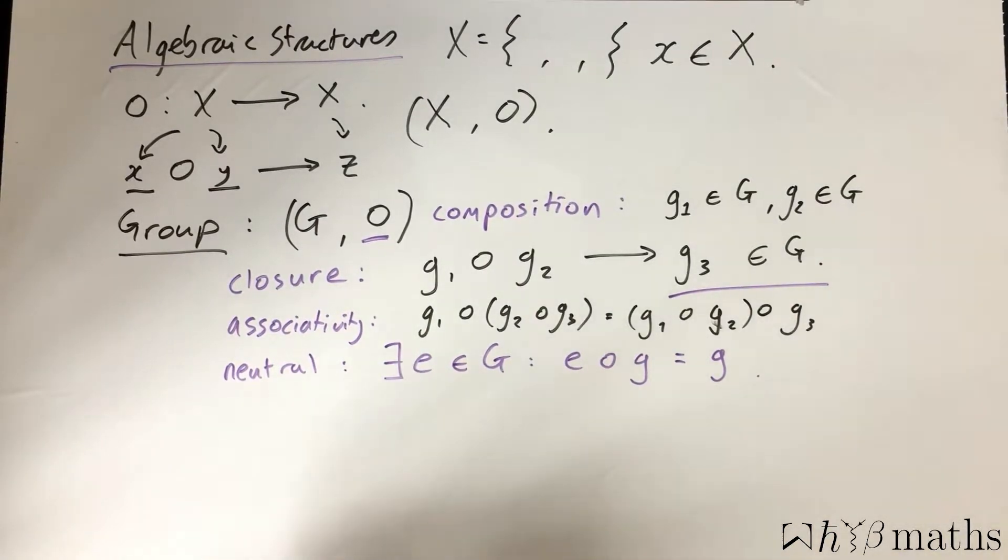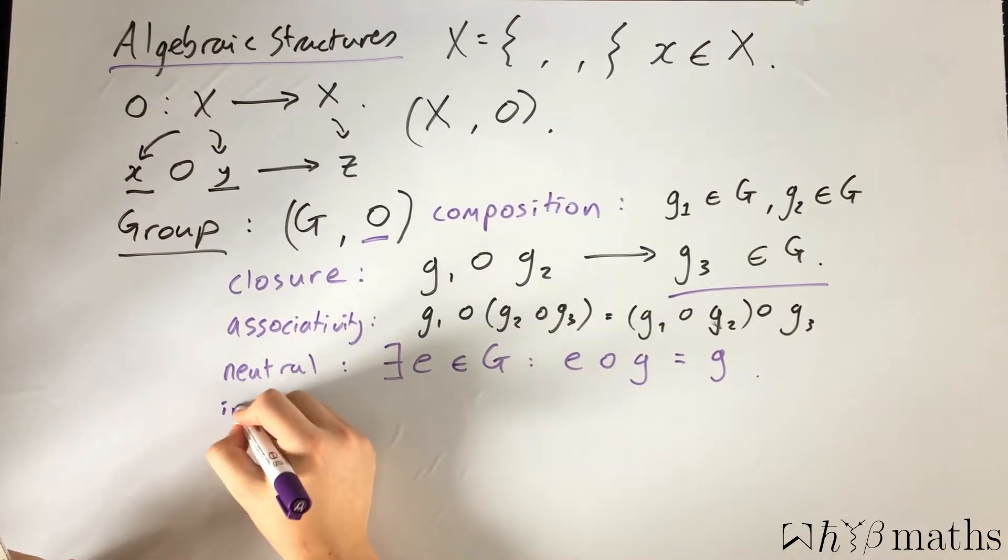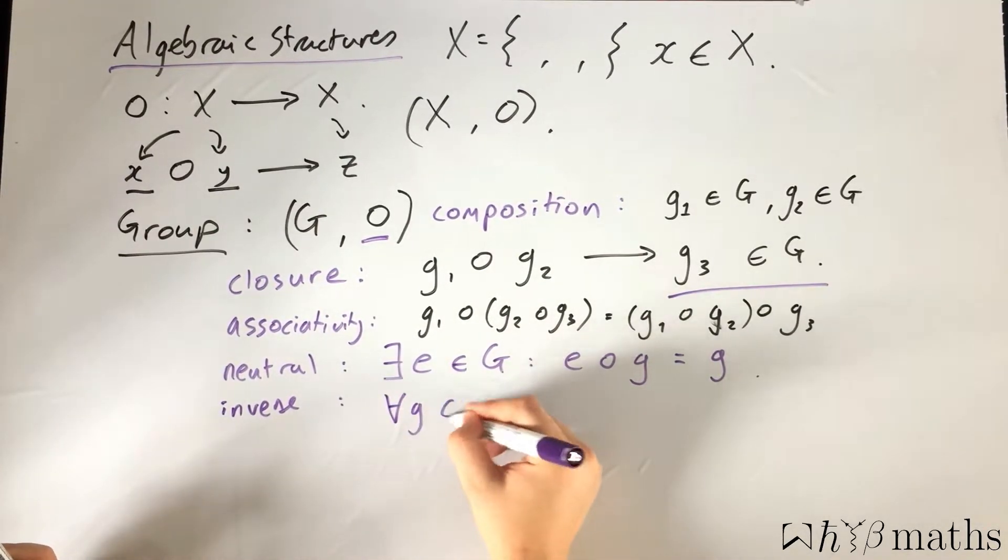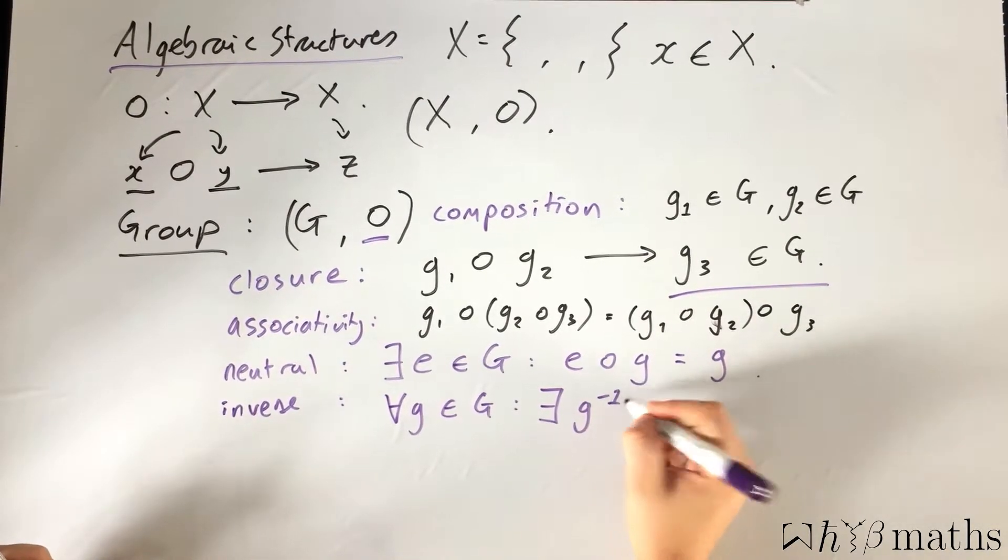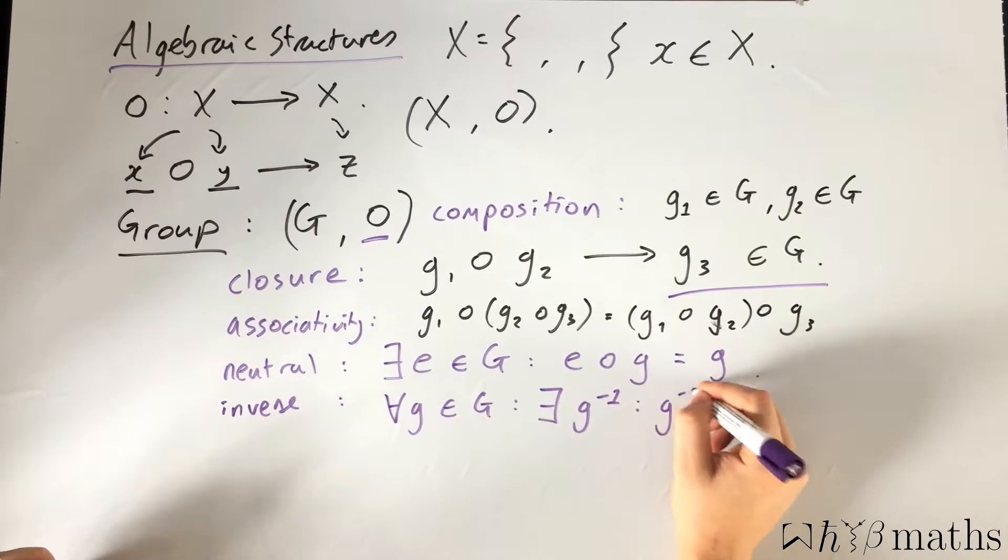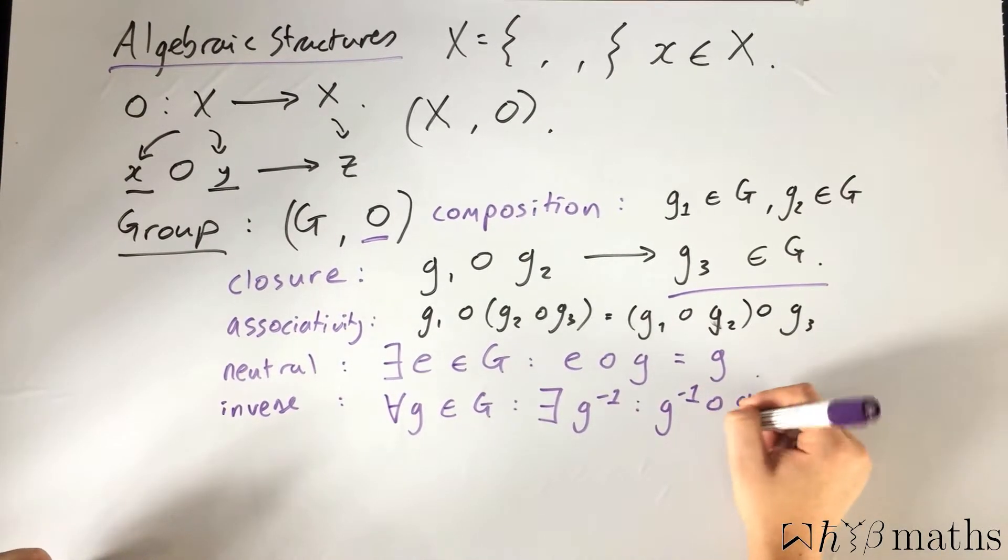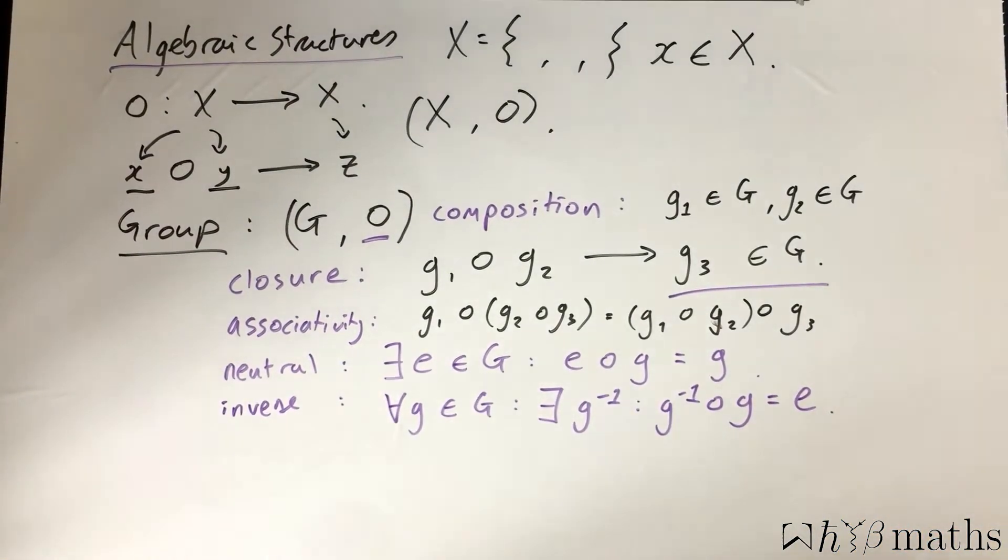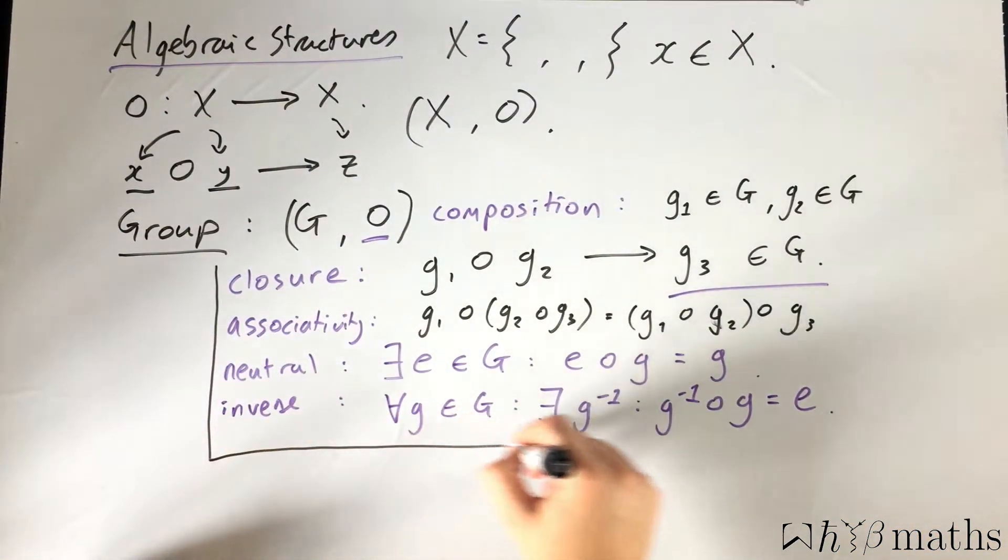And then finally we have inverse, which states that for all the group elements in the group, there exists another element which we call the inverse of that group element, such that when you compose the group element with its inverse, you just are returned to the neutral element.